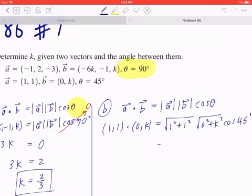Again, be mindful when you work this out, leave everything in exact form and don't round anything. So on the left hand side, you have 1 times 0, that's going to give you 0. 1 times k is going to give you k. On the right hand side, the square root of 1 squared plus 1 squared is going to be root 2.